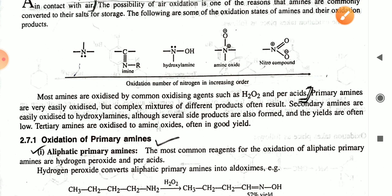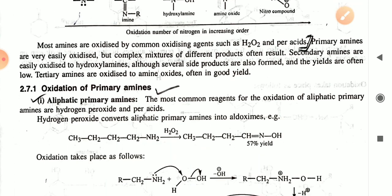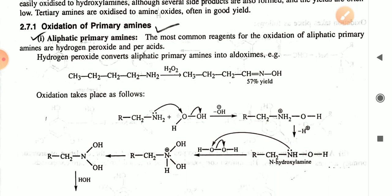Amines are oxidized by common oxidizing agents such as H₂O₂ and peracid. Primary amines are very easily oxidized, often resulting in a complex mixture of different products. Secondary amines are easily oxidized to hydroxylamines, although several side products are also formed and yields are often low. Tertiary amines are oxidized to amine oxides, often in good yield.